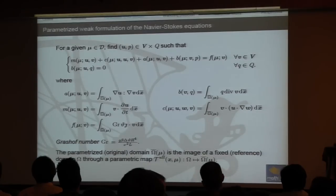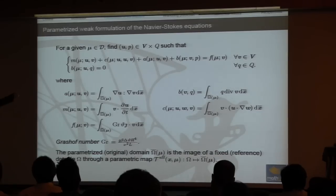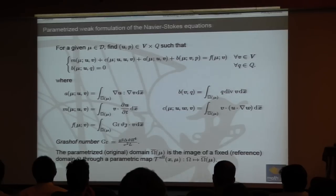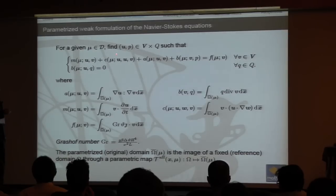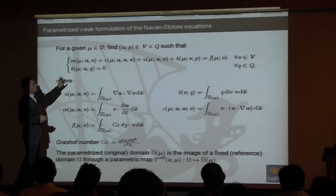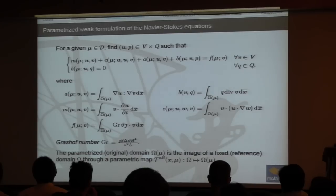For a general formulation of the parametrized Navier-Stokes equations, the parameter mu can represent a physical or geometrical parameter: a Reynolds number, Grashof number, Prandtl number, Rayleigh number, or geometrical parameters such as the aspect ratio of a cavity. We seek velocity u and scalar pressure p as solutions of this problem in weak formulation over a range of parameter variation.